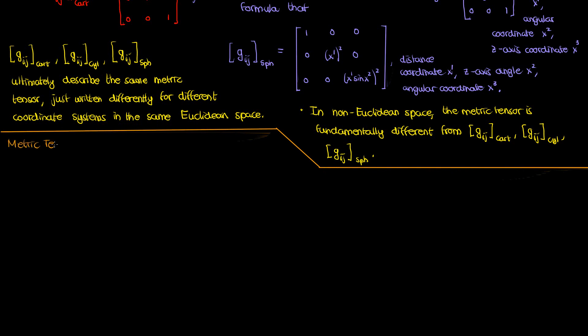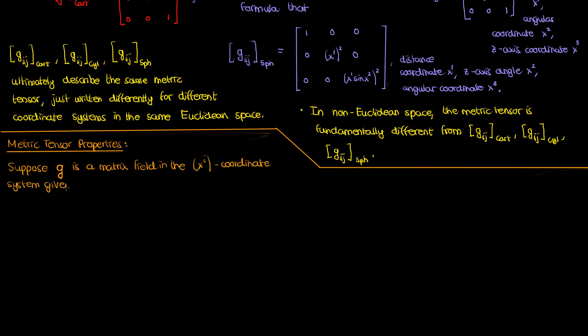In the next part of the video I'm going to describe some important properties of the metric tensor — these are what make the metric tensor a metric tensor; they define it. Say I have a matrix field g over some coordinate system where coordinates are given by x super i, and the components of this matrix field are given by g sub ij. A matrix field gives you a matrix at every point in a specified region of space — kind of like a vector field. Now, a matrix is not a tensor, and it's especially not a metric tensor, so in order for g to be a metric tensor it has to satisfy additional properties.